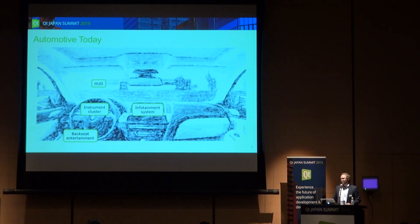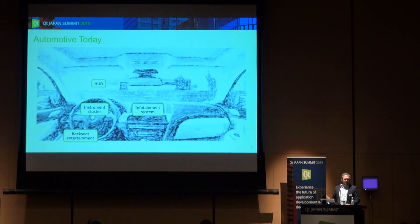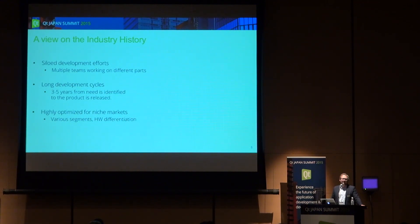Then Apple changed the whole business model by making only one product and having all differentiation happen in software. The way you use an iPhone isn't that there are different iPhones for business users, gamers, or kids — you install different applications. The automotive industry is in much the same state today: making very different devices for different segments, while users are becoming more accustomed to and expecting fluid user interfaces and fancy features. More and more, the screen is deciding what type of car someone wants to buy — a major challenge for companies that need to change their development model, with silo development efforts and three-to-five year development cycles.